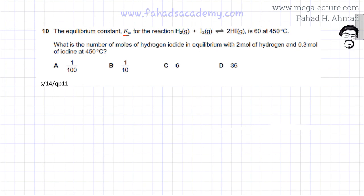You're given the value of Kc which is 60. I'm going to write the expression for Kc for this equilibrium, which is the ratio of the concentration of product divided by the concentration of reactant. So HI is my product, but since there are two moles in the equation it's going to be squared, divided by the concentration of H2 into the concentration of I2, which are my reactants. So this is the expression for Kc and the value is given as 60.